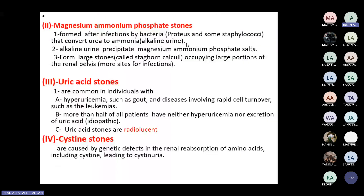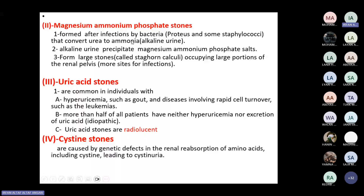Magnesium ammonium phosphate (struvite or staghorn) stones are usually formed after infection — specifically with Proteus and Staphylococci bacteria. This is the only stone caused by infection. All other stones occur in acidic urine; this is the only stone that occurs in alkaline urine. Protease bacteria convert urea to ammonia, making urine alkaline, which causes precipitation of magnesium ammonium phosphate salts, forming crystals and then large stones. These stones can irritate the transitional epithelium, causing squamous metaplasia and risk of squamous cell carcinoma.